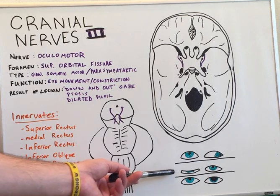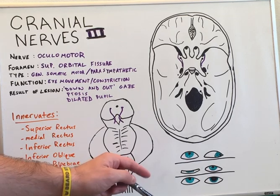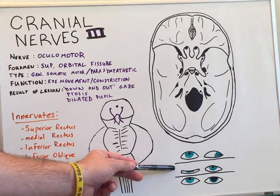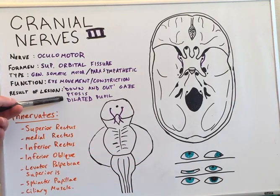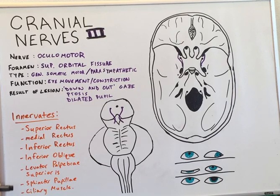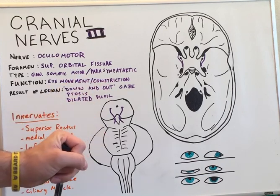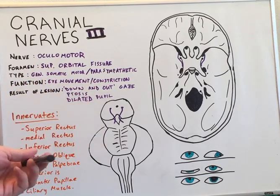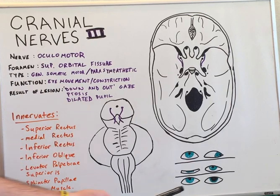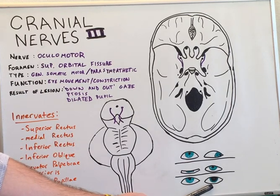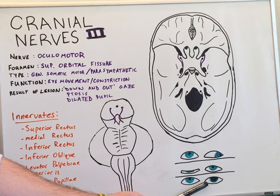With ptosis, the patient would have difficulty elevating their eyelid. A dilated pupil would result from paralysis of the sphincter pupillary and ciliary muscles, as the eye would lose its ability to constrict the pupil when there is a large amount of light in a person's visual field, so they would have a constant dilated pupil on presentation.